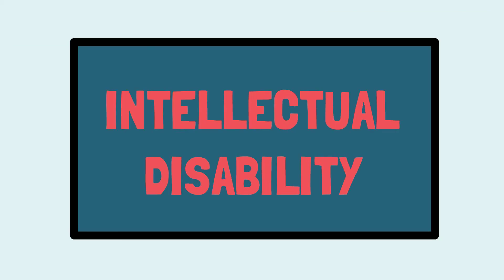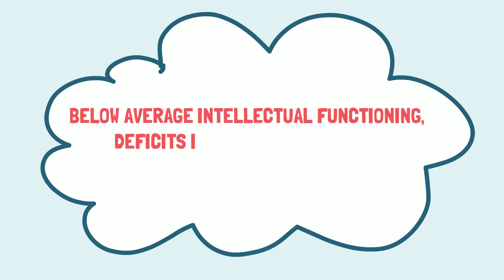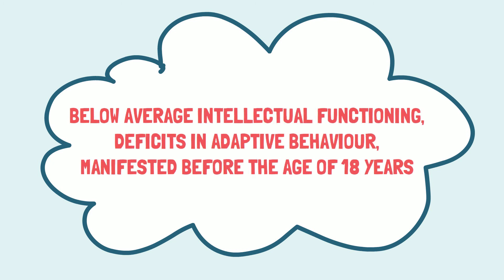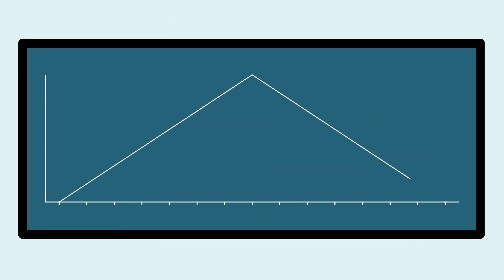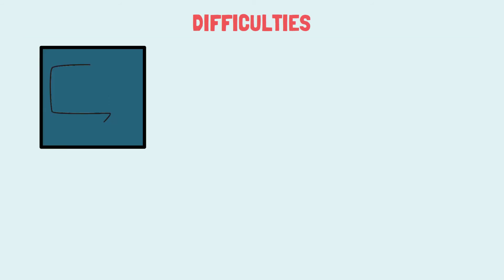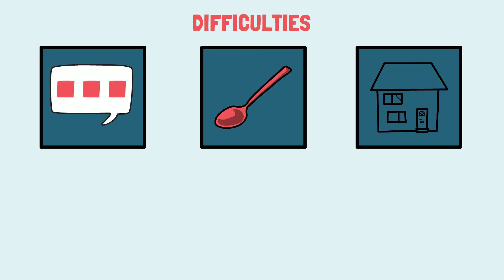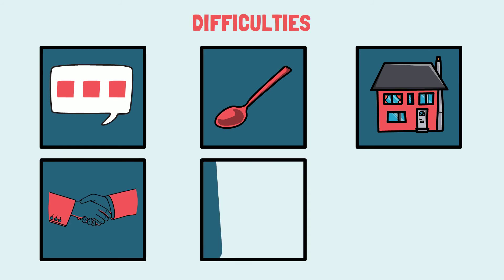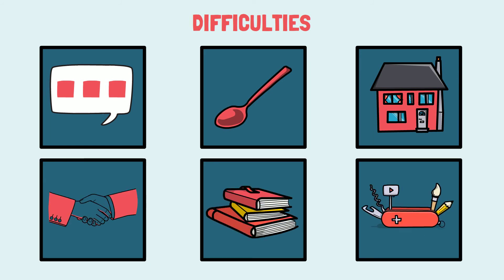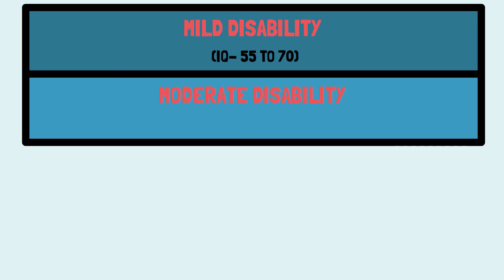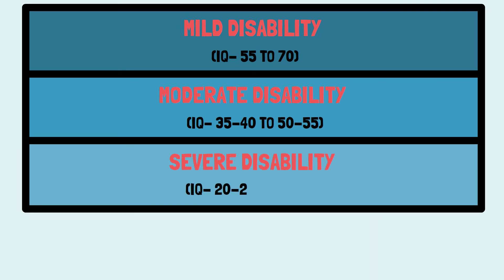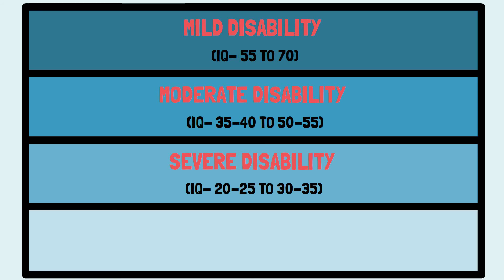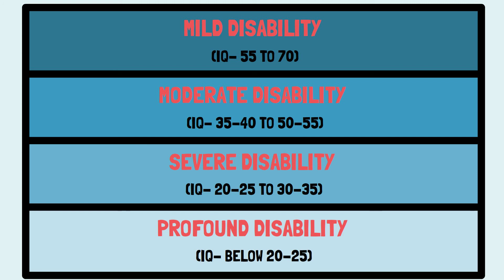The third type is Intellectual Disability. This refers to below average intellectual functioning and deficits in adaptive behavior manifested before the age of 18 years. Individuals have an IQ of approximately 70 or below, with marked difficulties in communication, self-care, home living, social and interpersonal skills, functional academic skills and work. Levels range from mild (IQ 55–70), moderate (IQ 35–55), severe (IQ 20–35), to profound (IQ below 20–25).